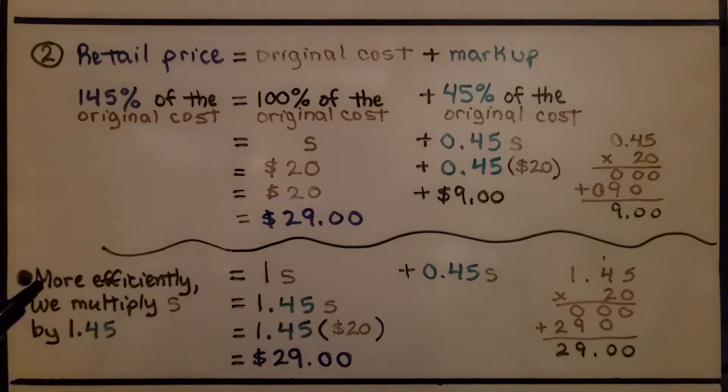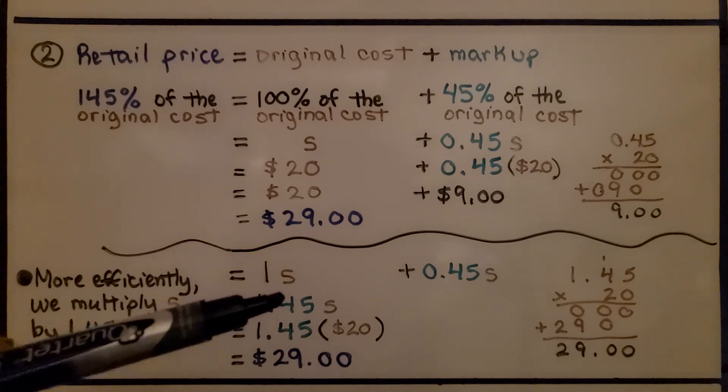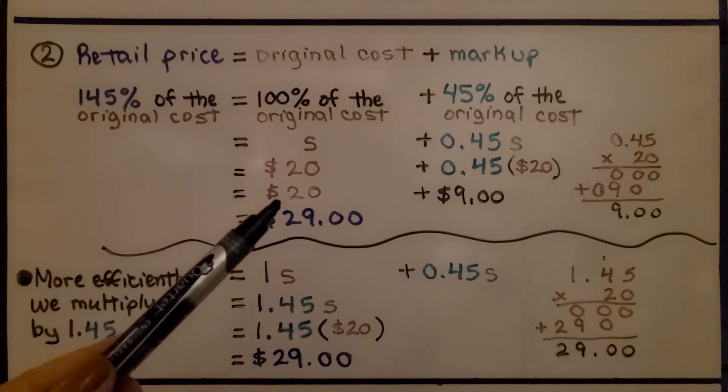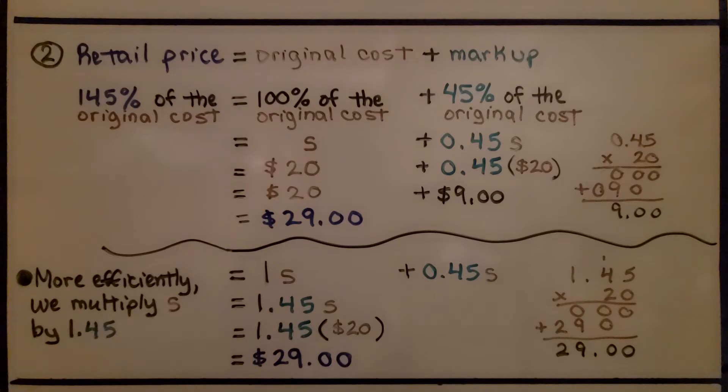To do it more efficiently, we multiply S by 1.45. We can add the 1 plus the 0.45 as 1.45S. Now we multiply it by that $20. That gives us $29 as our retail price. So by multiplying by the 1.45, we didn't have to do the extra step of multiplying just by 0.45 and then adding the 20. We do it all together.